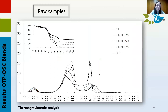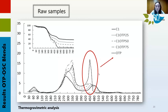This is the thermogravimetric profile of the raw samples. These curves are in agreement with the previous results — the peak corresponding to olive tree pruning is higher than the others due to the large fixed carbon content compared to the other blends, and the rest are quite similar, consistent with what we saw in the proximate analysis.